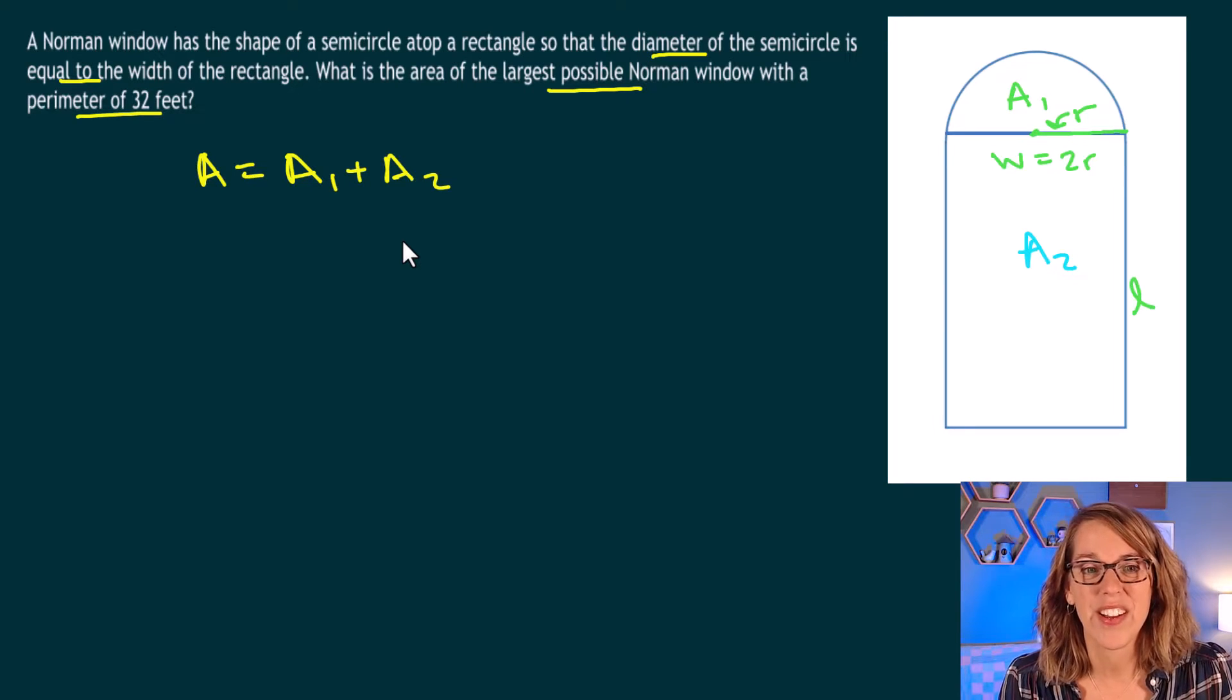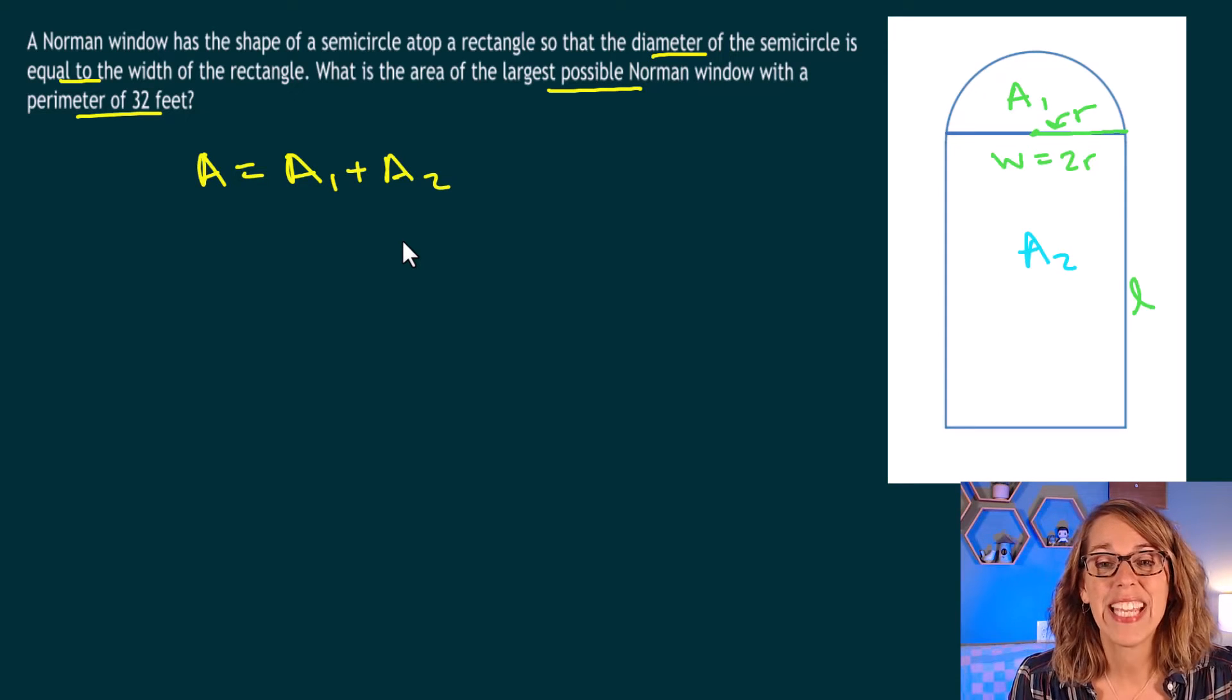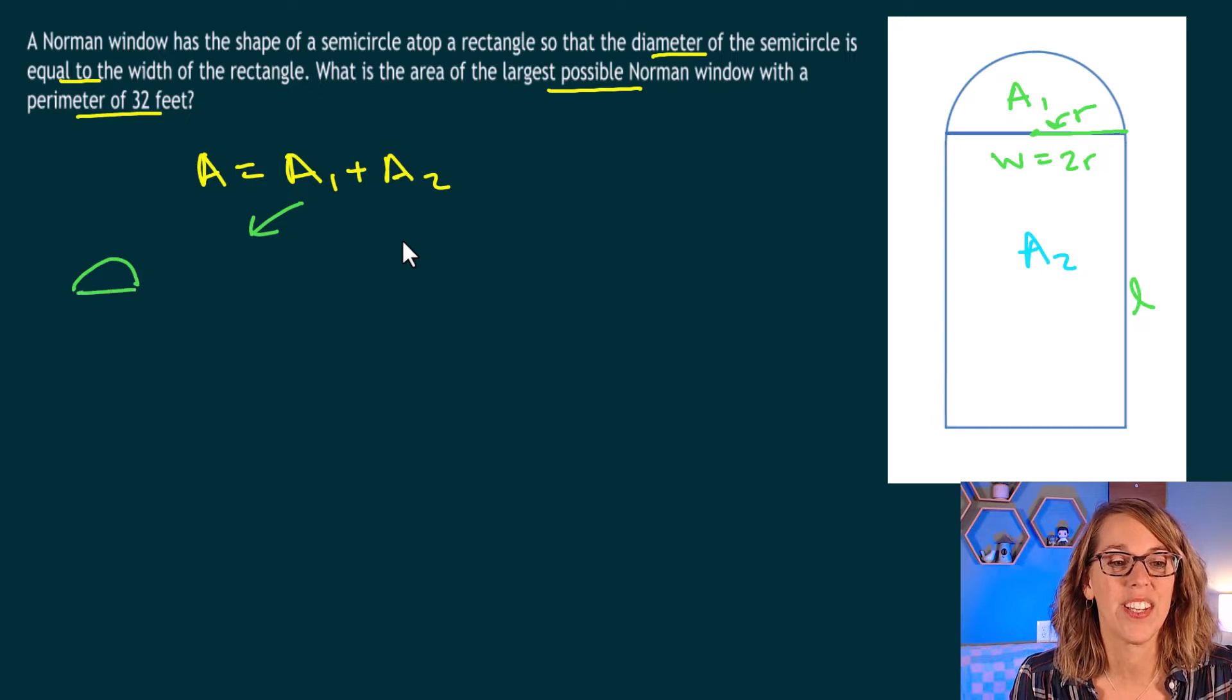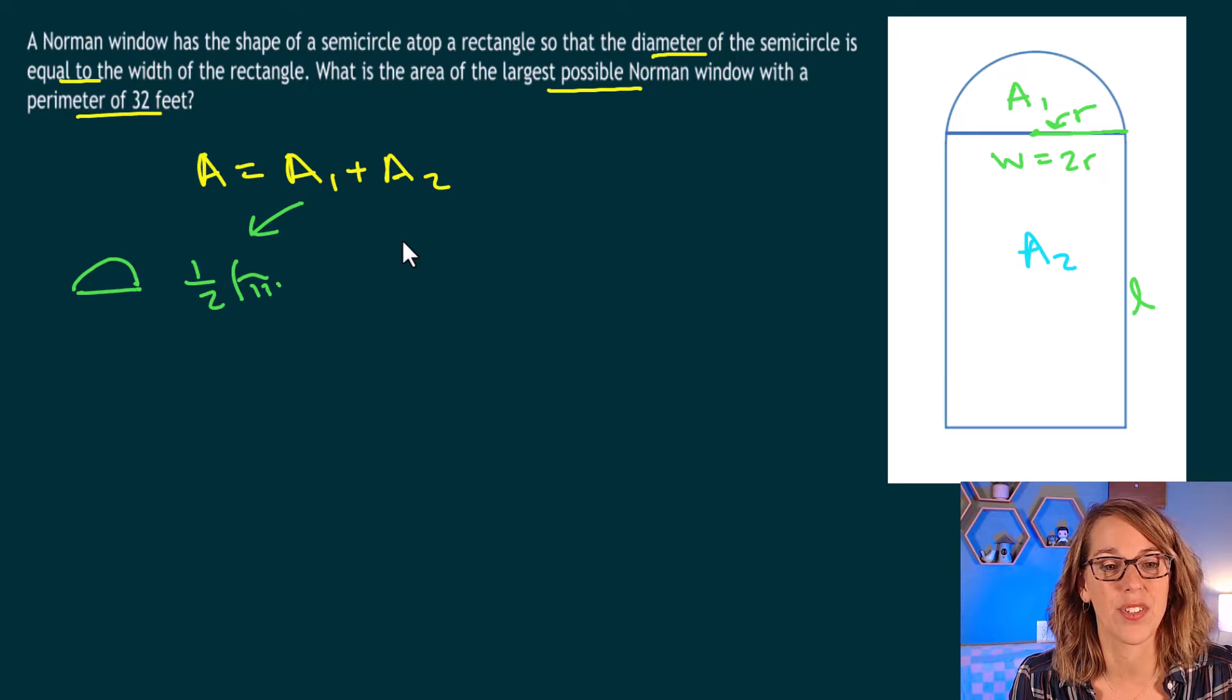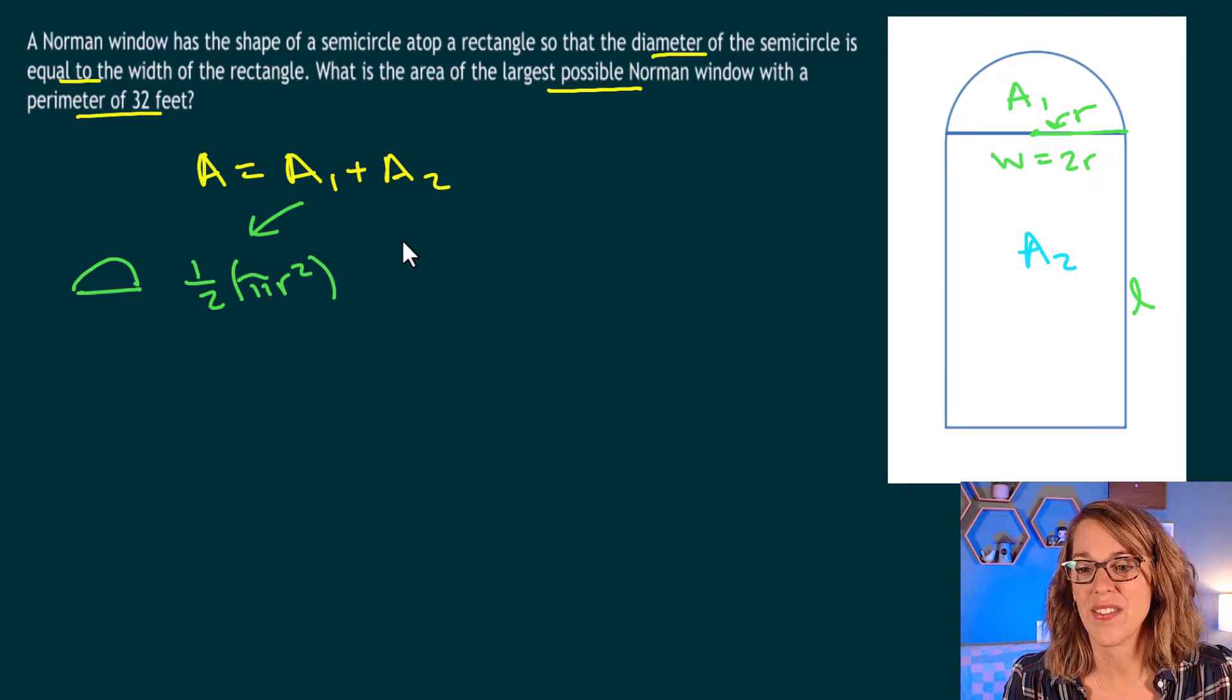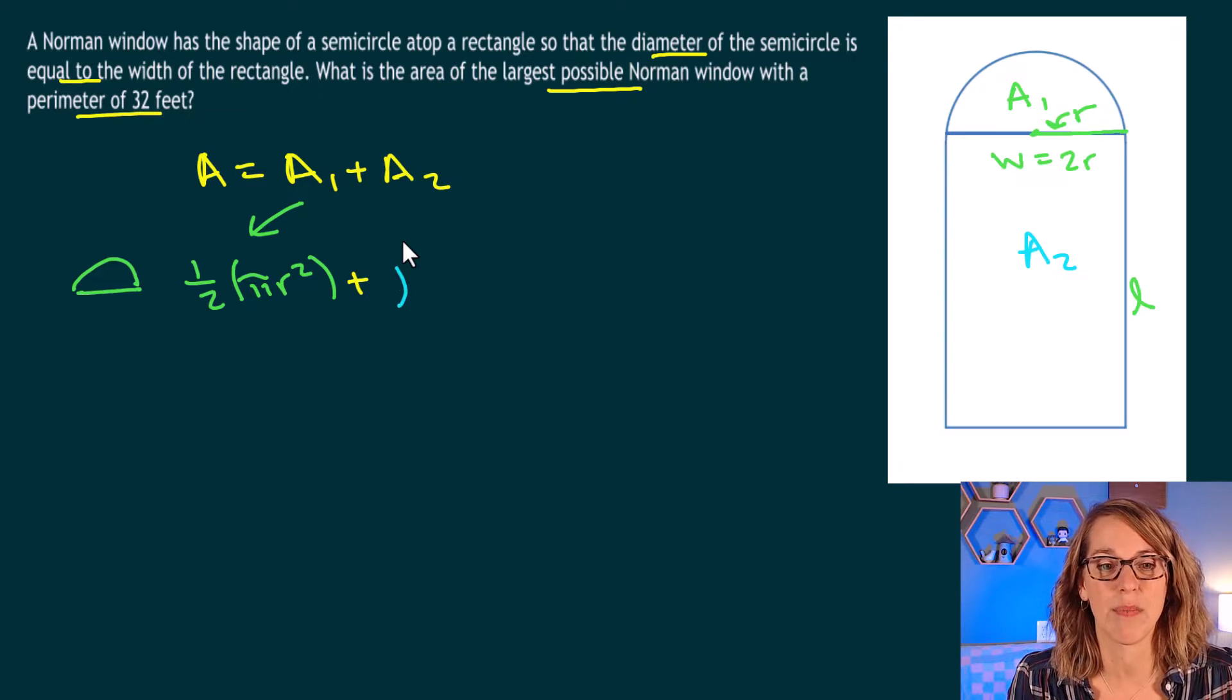Let's go ahead and put these two areas together. I'm going to start with the area of the semicircle in green. So the area of that semicircle, that's going to be one half the area of a circle, which is pi r squared, and then the area of the square is going to be length times width. So length times width.